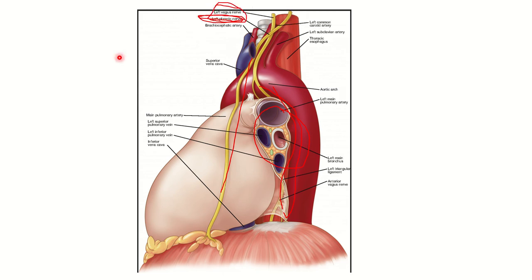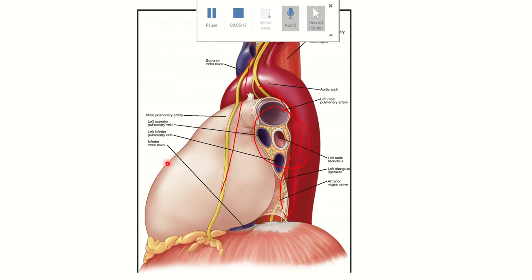This point is very important to remember. The repeated question arises in the exam that the most anteriorly seated structure at the level of the root of the lung is the phrenic nerve. This figure is very important for the MRCS exam for answering such questions.